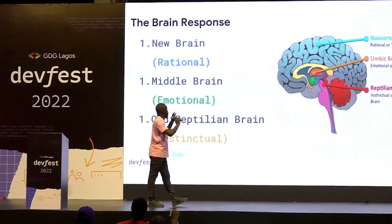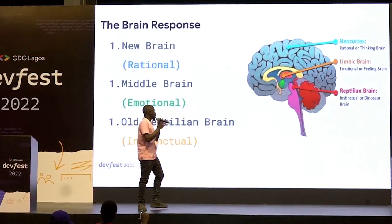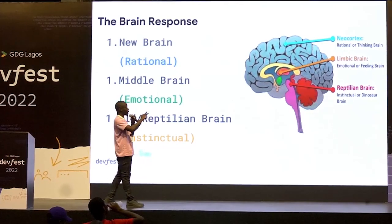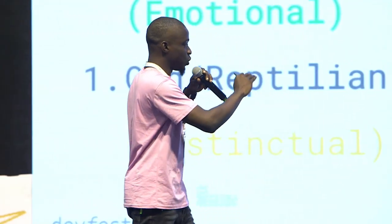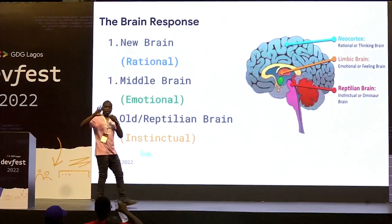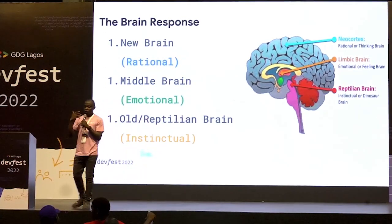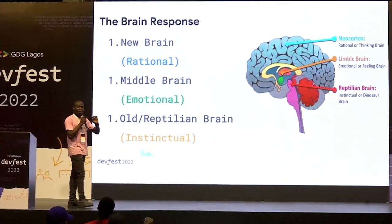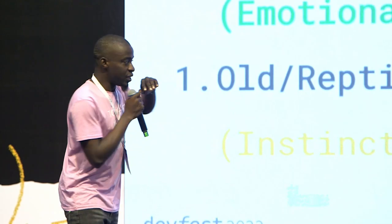There are three parts of the brain. There is the neocortex, which is the new brain — the side where we do our rational thinking. Then we have the middle brain, which is the limbic. The limbic is where you have emotions and feeling. And we have the lower part, which is the reptilian. The reptilian is the most important part when you are doing marketing, because this is where instinct comes into play.